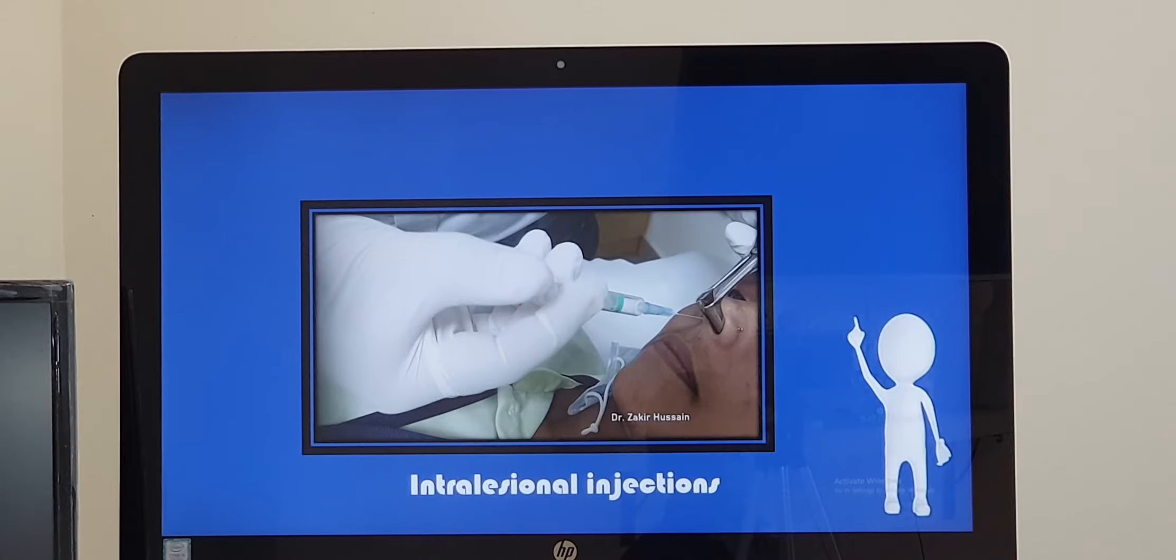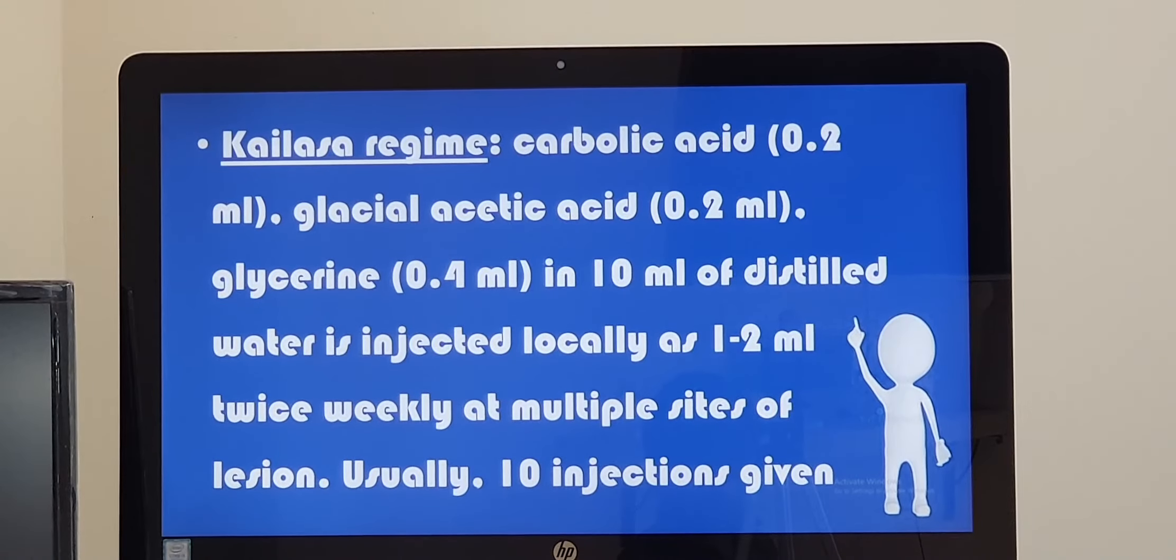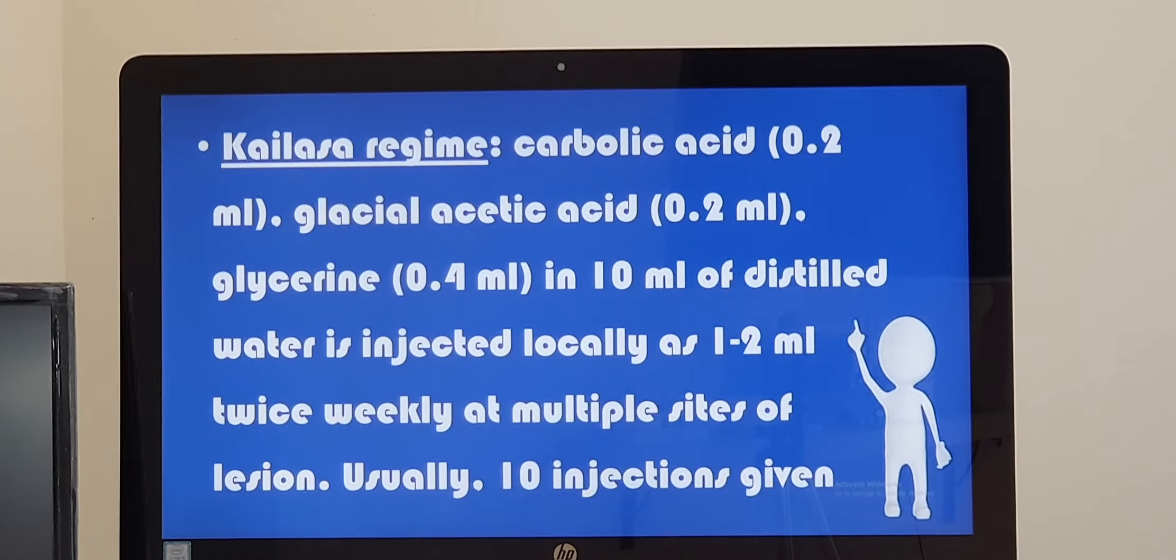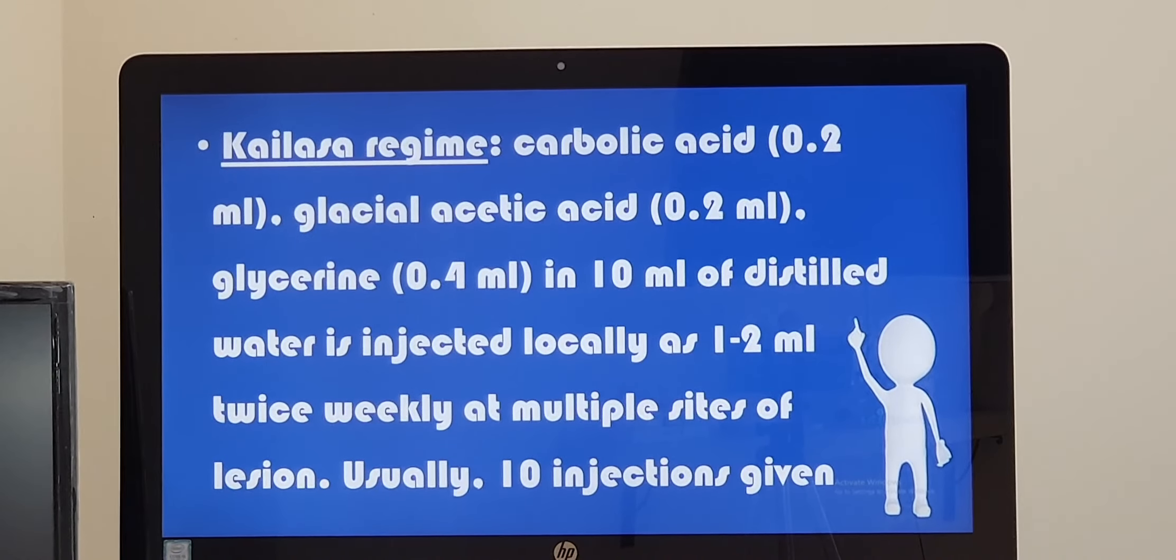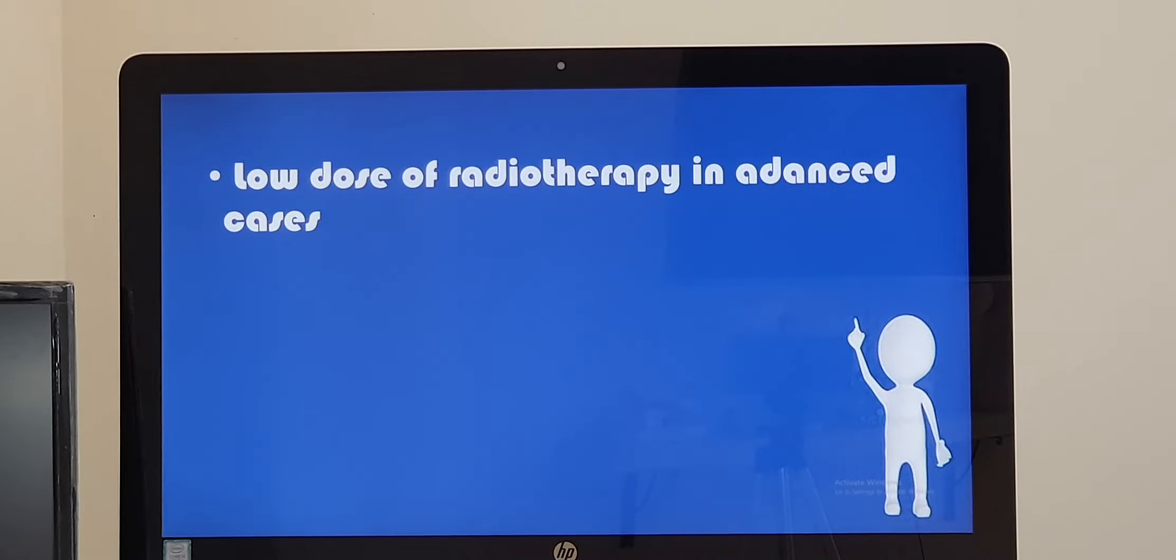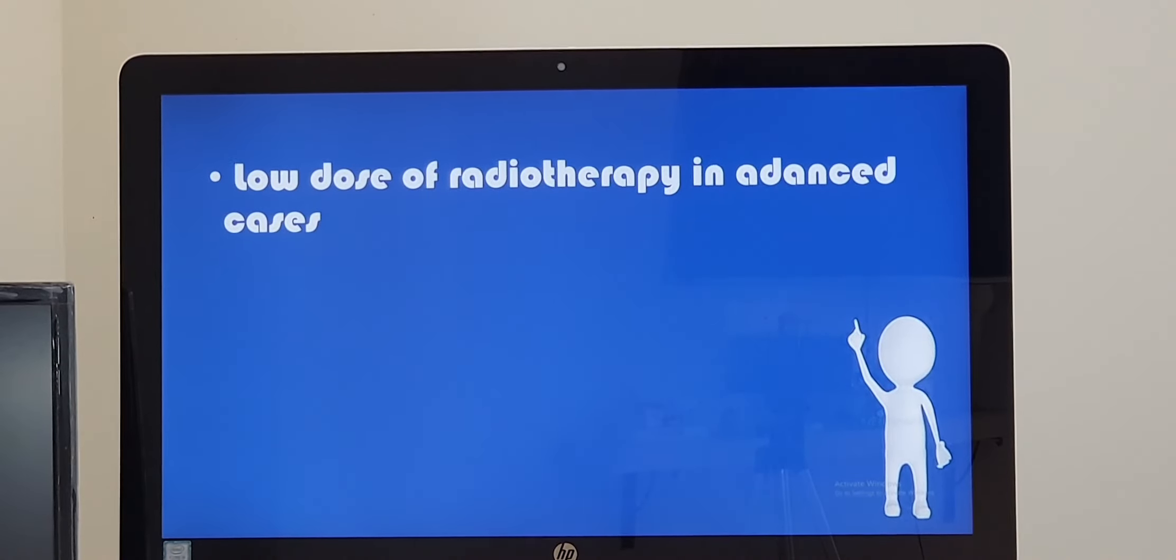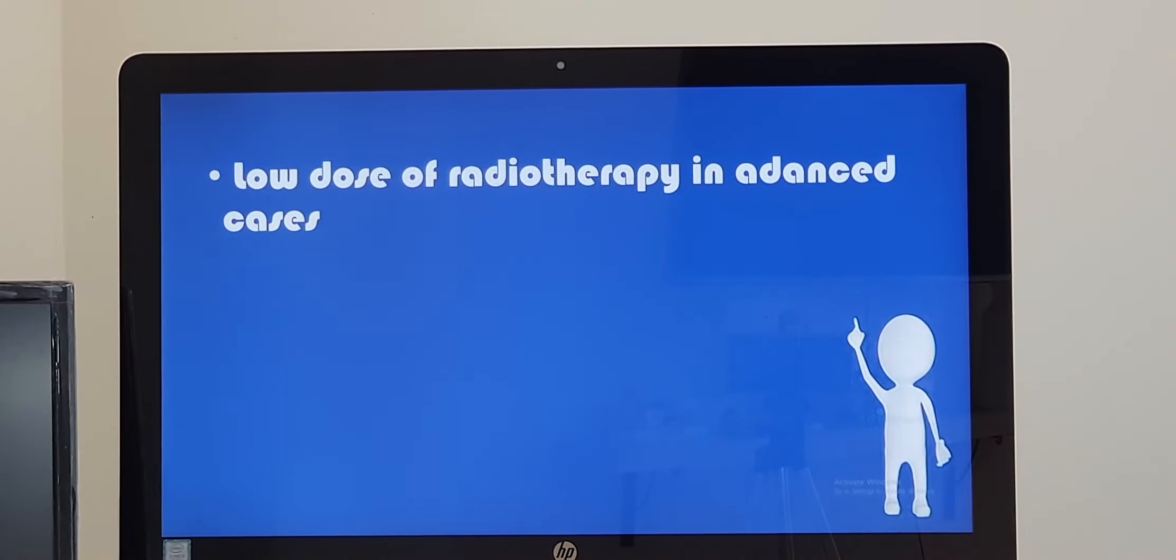At the same time, we like to give injections inside the nose. And there is a particular combination for it, Shylas regime. It is termed as Shylas regime, where carbolic acid, glacial acetic acid and glycerine in a particular proportion, in 10 ml distilled water, 1 or 2 cc will be injected in multiple sites in the nose. And approximately 10 injections have to be given. This is how we manage medically.